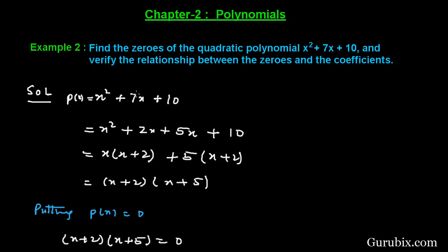Now we shall factorize this quadratic polynomial using the method of splitting the middle term. The middle term is 7x, and we have to split it such that the sum of its factors equals 7x and the product of the factors equals the product of the first term and the last term. The first term is x² and the last term is 10.